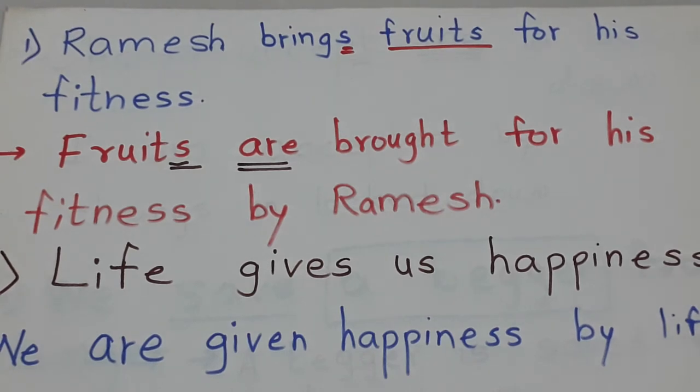Now let's see the next sentence. Ramesh brings fruits for his fitness. Now this is in present tense. The present tense helping verbs are am, is and are. Is is for singular, are is for plural. Now Ramesh brings fruits. Fruits is plural, so the answer: Fruits are brought for his fitness by Ramesh.